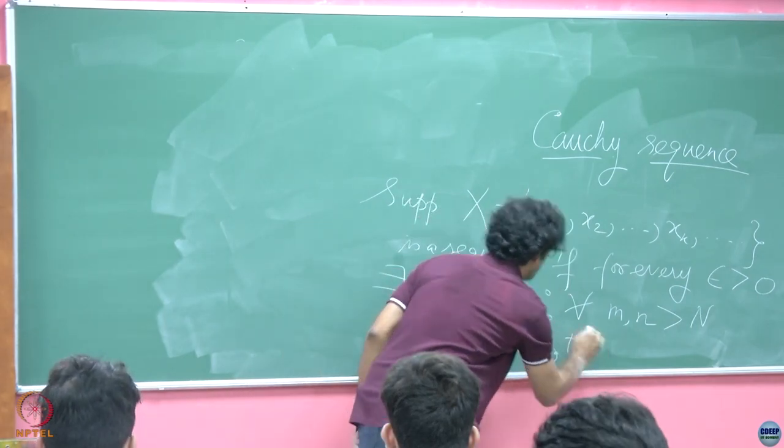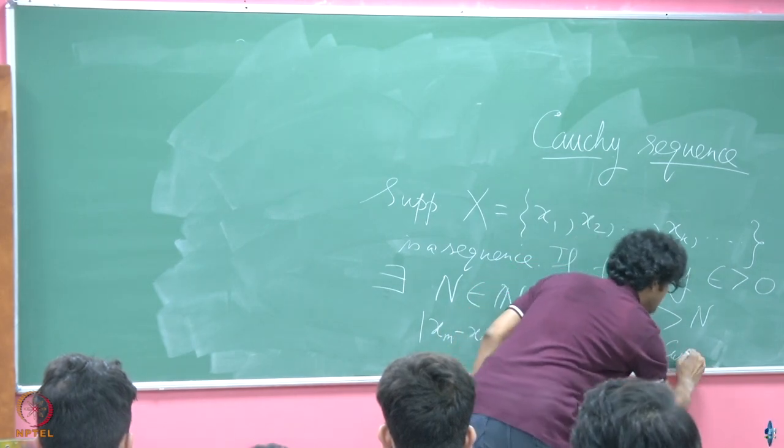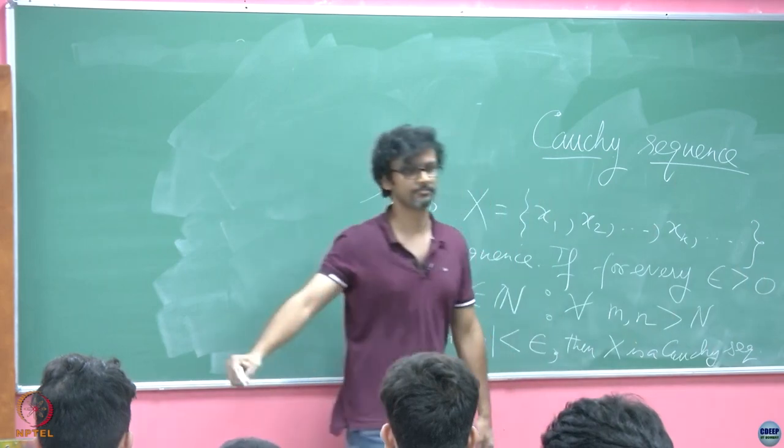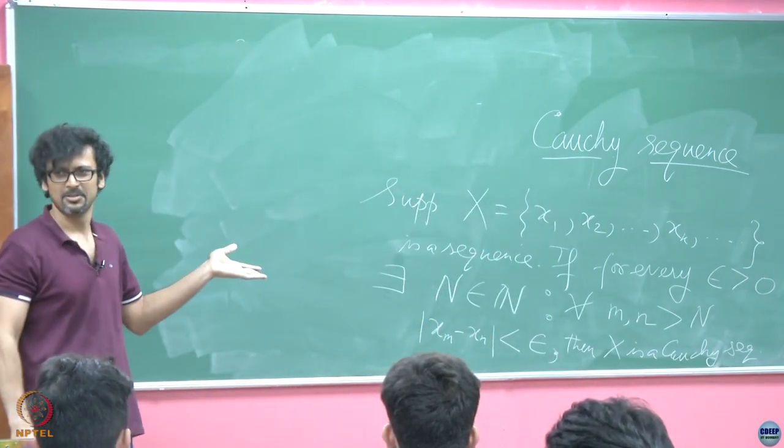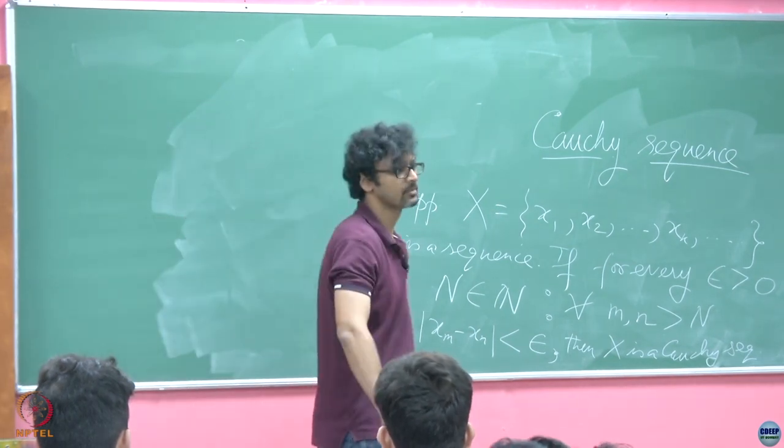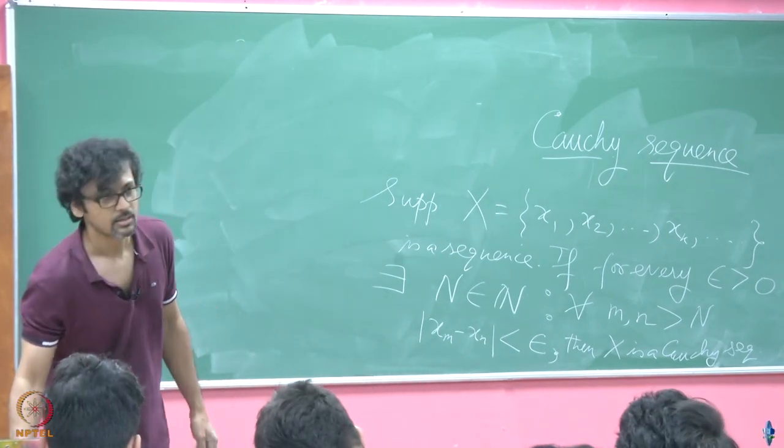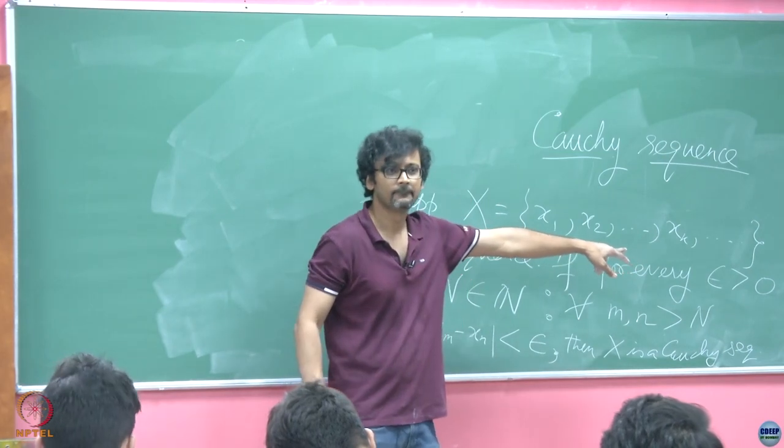That does not complete it. Then, X is a Cauchy sequence. Seems a little familiar now. That is Cauchy sequence. So, how to view this?